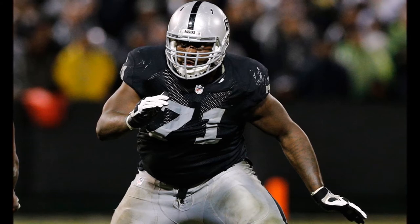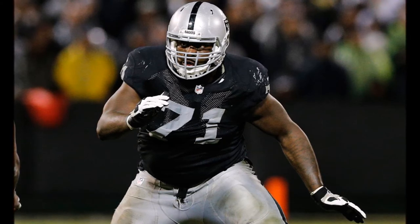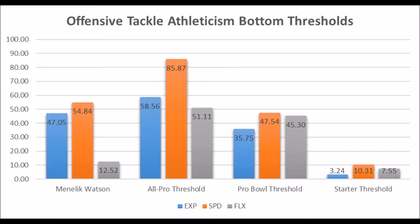The first thing I want to start off with is his athleticism profile, putting all the focus there, because Watson was considered to be a raw athletic project. His athleticism traits were: a 47.05 explosive or burst score, a 54.84 speed score, and a 12.52 flexibility score.